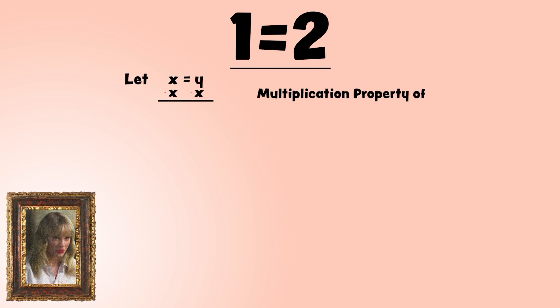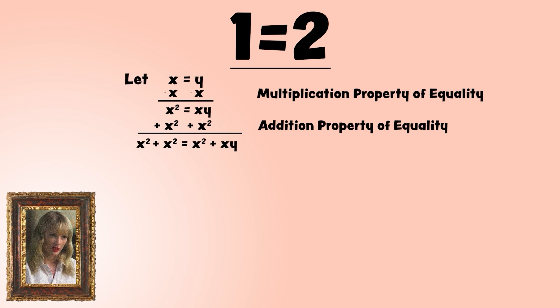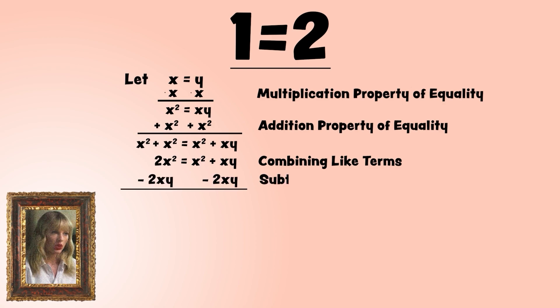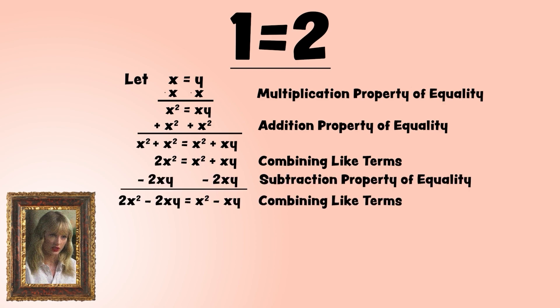Then use the multiplication property of equality to multiply both sides by x. Next, we will use the addition property of equality to add x squared to both sides. Combining the like terms on the left gives us two times x squared. Now we can subtract two times x times y from both sides.